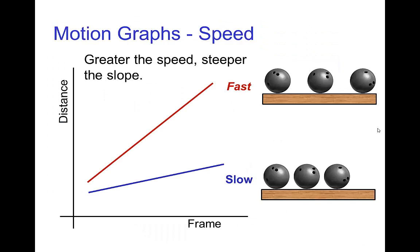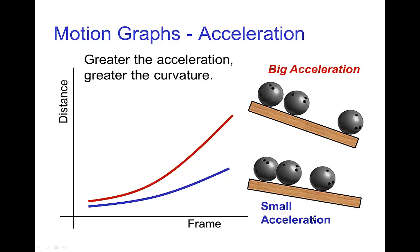Here's another way of viewing the distinction between speed and acceleration using the motion graph. For an object rolling slowly at a constant speed, we have a curve that's not very steep. If it's going faster and the spacings are larger, the motion curve will have a steeper slope. With acceleration, something that has a small acceleration produces a motion curve that, because it's accelerating, is not a straight line — it has curvature. But if the acceleration is small, the curvature is small because the speed is not changing rapidly. When we have a large acceleration, there is a lot of curvature in the motion curve.